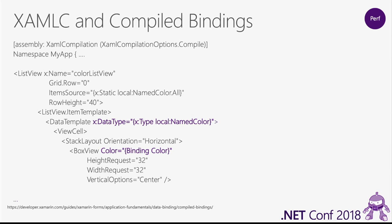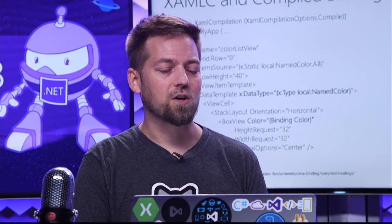First: XAML-C and compiled bindings. XAML-C is compiled XAML — it gives you compile-time checking so you don't have to wait until runtime to find out if it's going to blow up. Compiled bindings give you a performance boost for all your bindings — you specify your data type, and for example binding to a named color coming off a view model. We recently did quite a bit of work on build times. XAML-C was taking upwards of seven seconds in the Smart Hotel 360 app, and we got it down to a second or below.